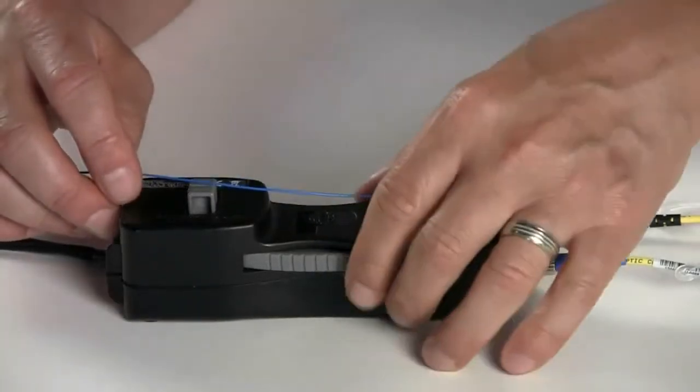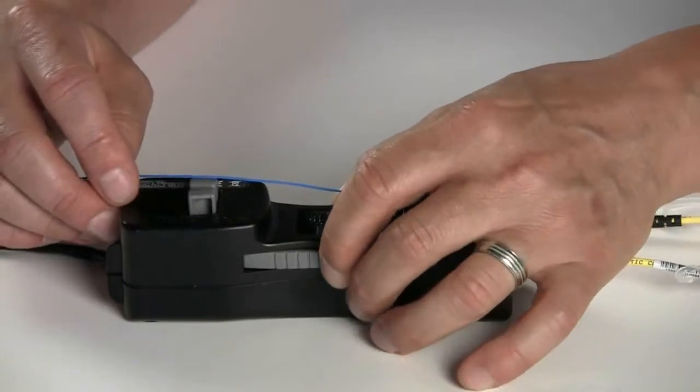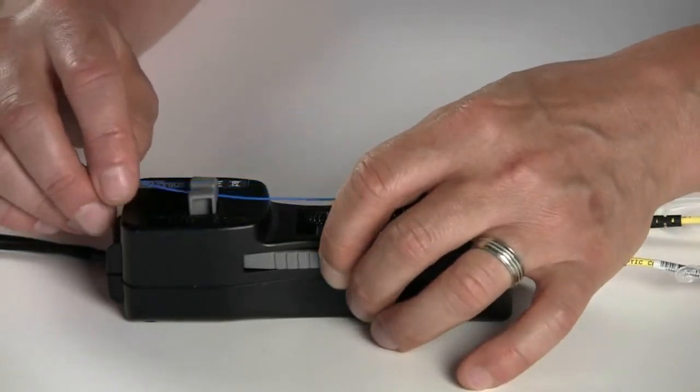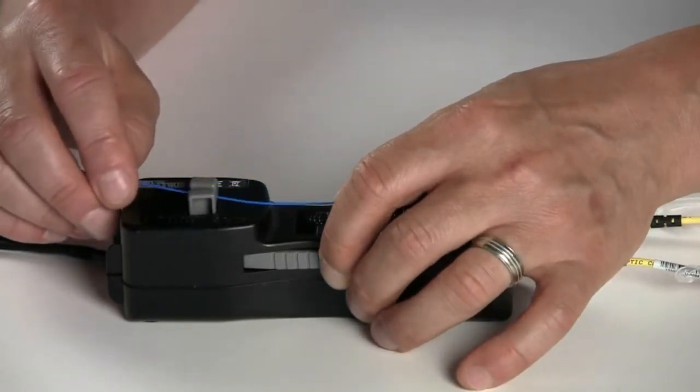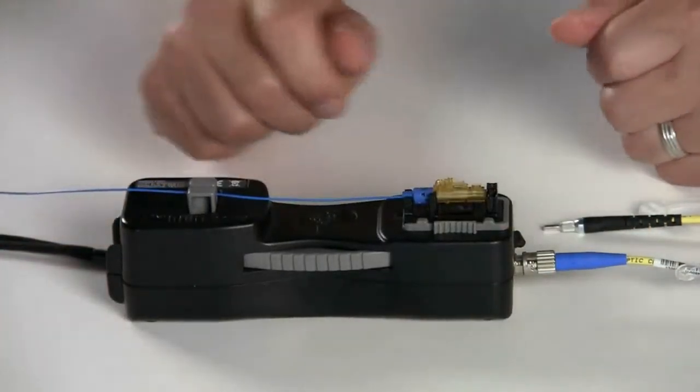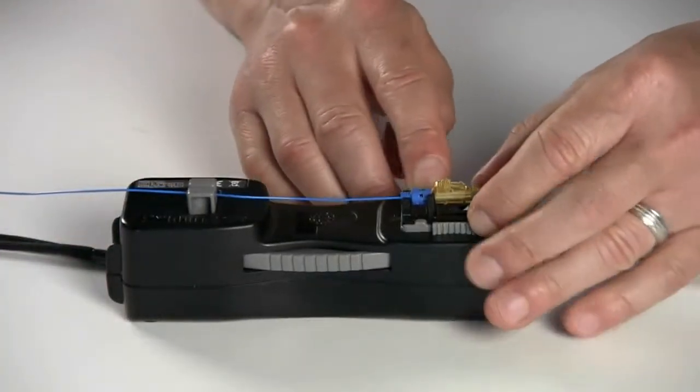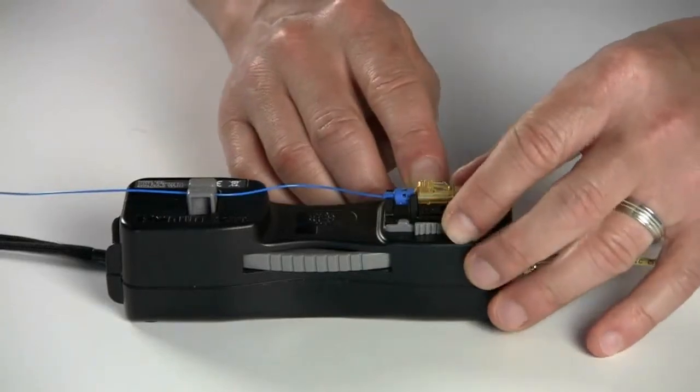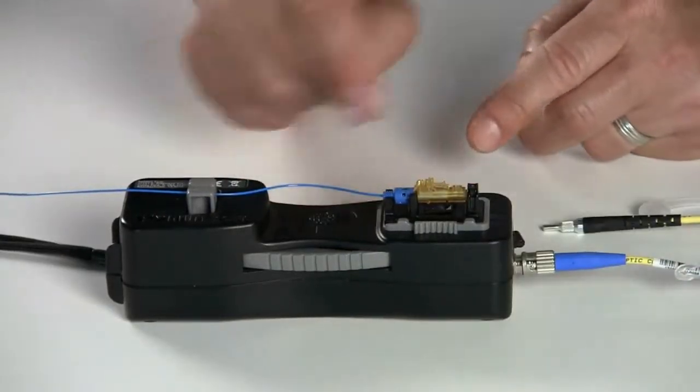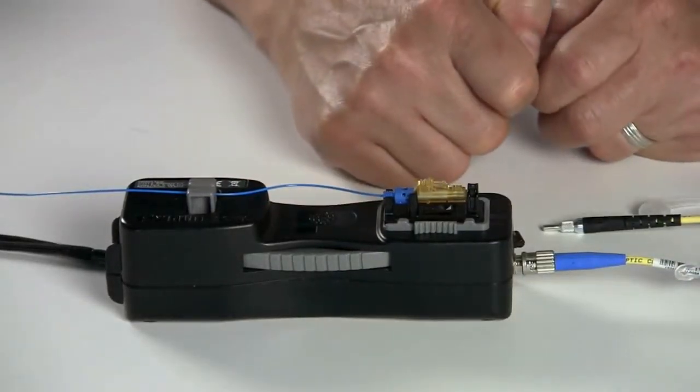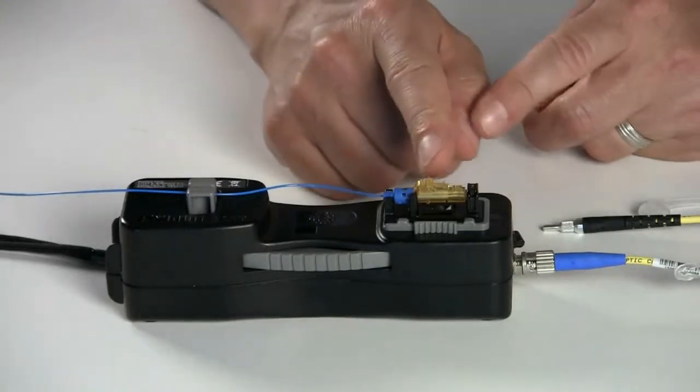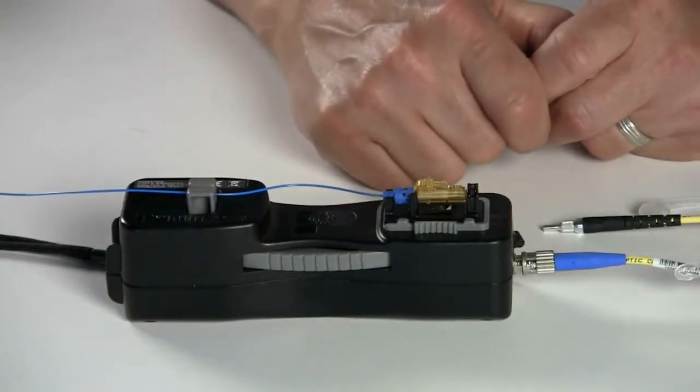Once that is done, release the buffer clamps by squeezing the side of the OptiCam tool. Place the buffer into the clamps and then squeeze the clamps. After that, you can slide the sled back towards the back of the tool and a little bow will occur. This provides proper tension between the end faces in the OptiCam itself.